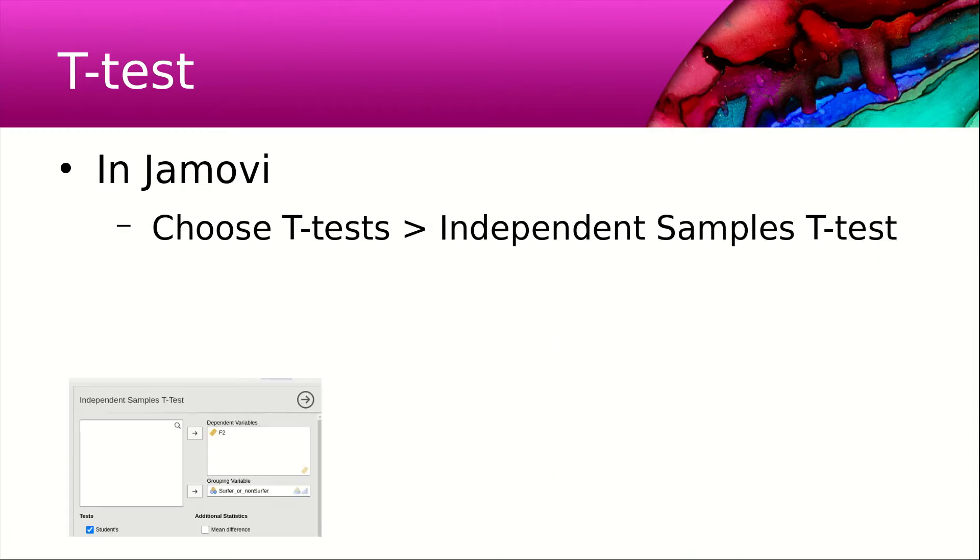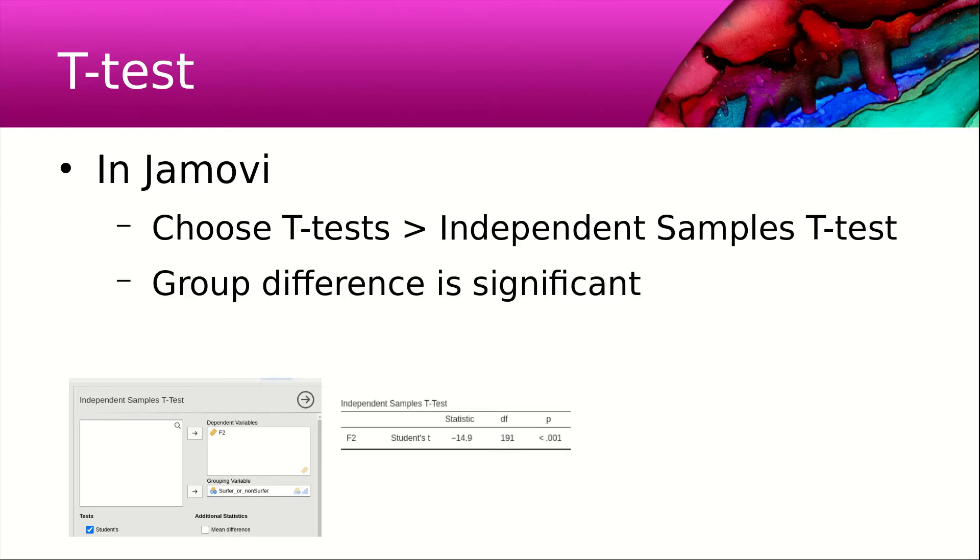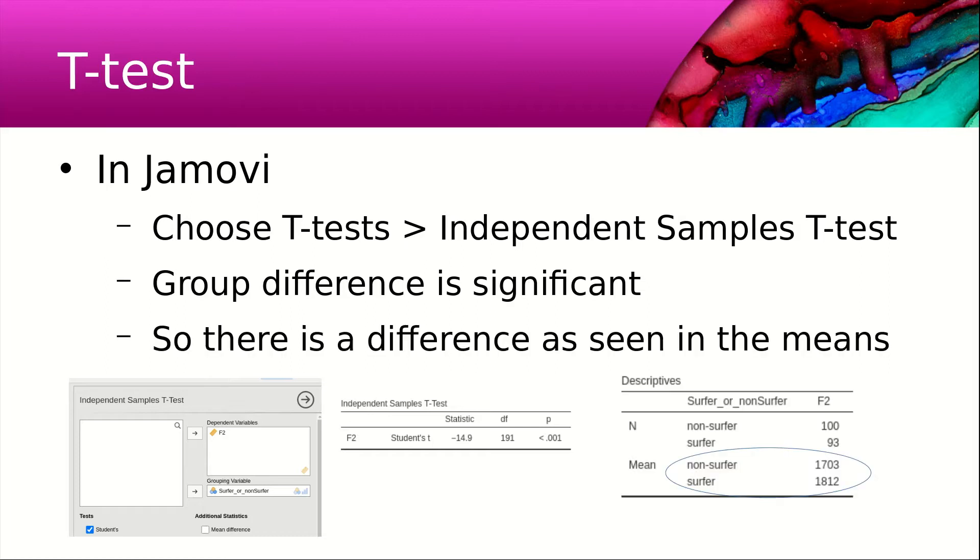To do this in Jamovi, we choose t-test, independent samples t-test, and put the variables in as shown below. What we see is that the group difference is significant, and when we look at the means we see that the non-surfers have a lower F2 than the surfers do.